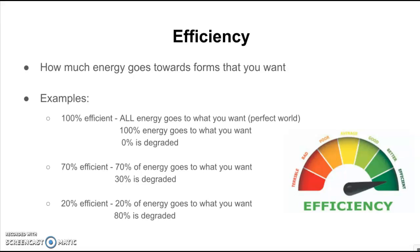Let's say something is 70% efficient — that means 70% of the energy goes towards what you want, but 30% of it is degraded. And a low efficiency, like 20% efficient, means that only 20% of the energy goes towards what you want, and 80% is degraded.